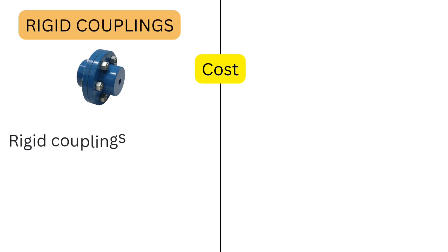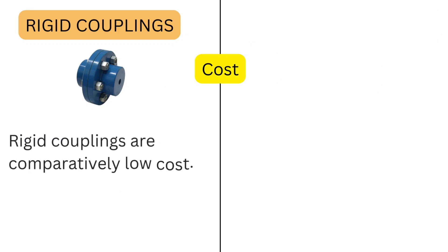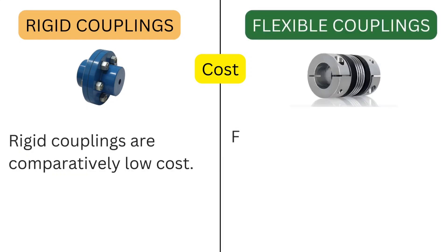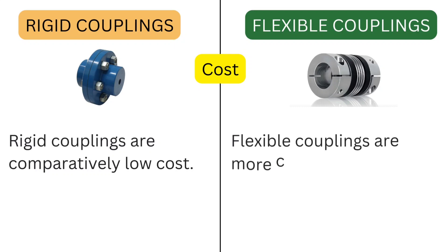Comparing cost: Rigid couplings are comparatively low cost. Flexible couplings are more costly.